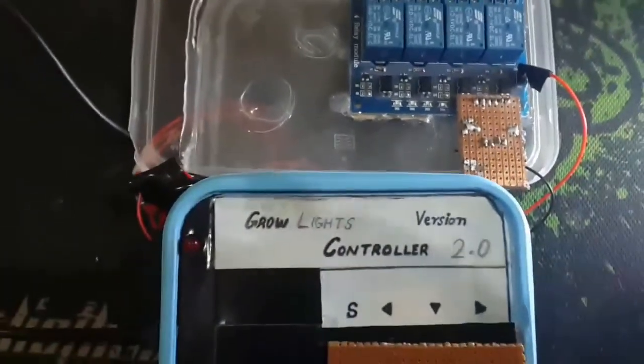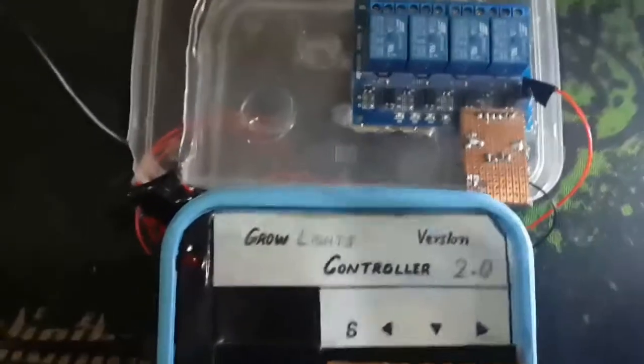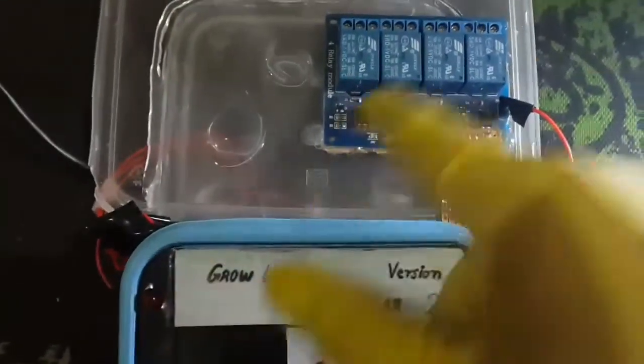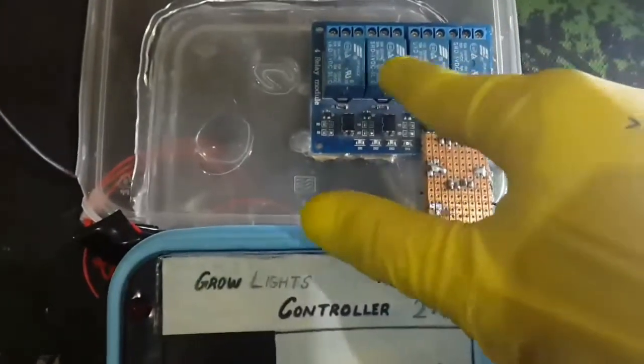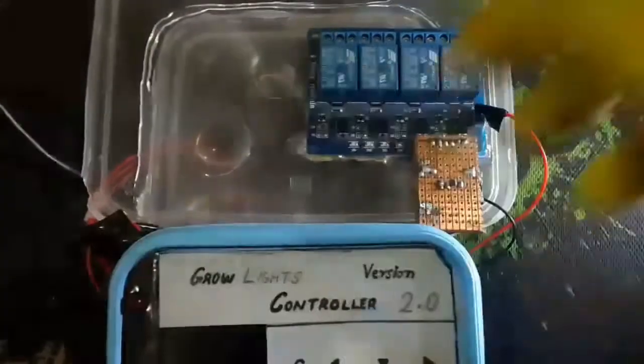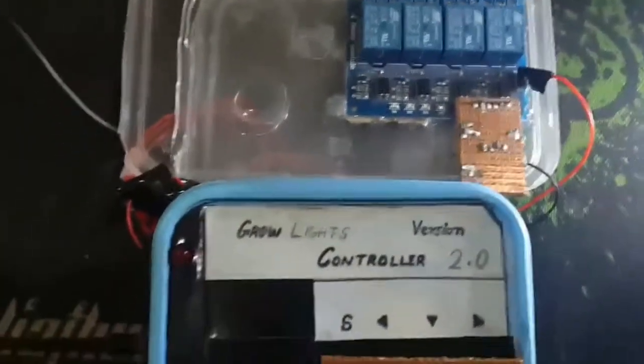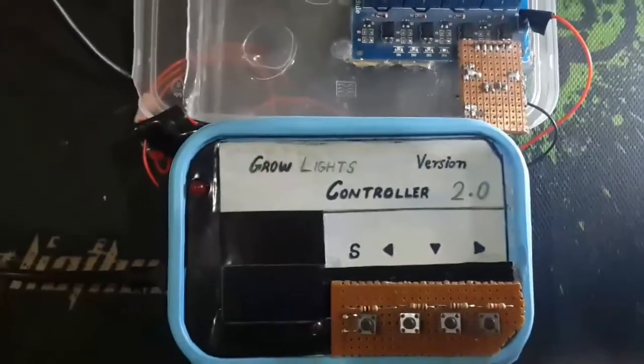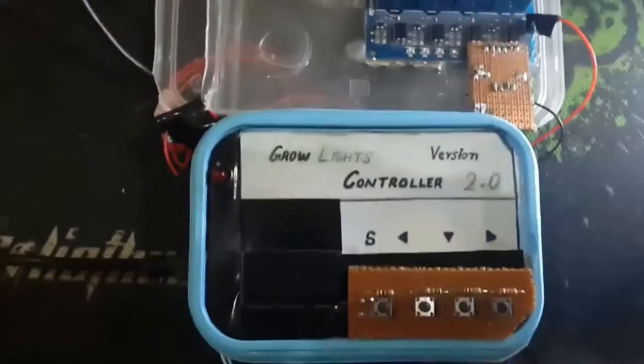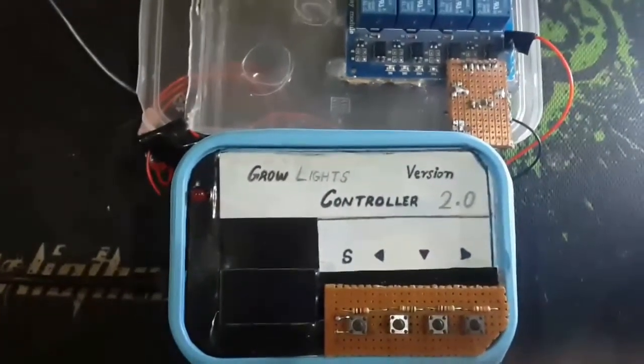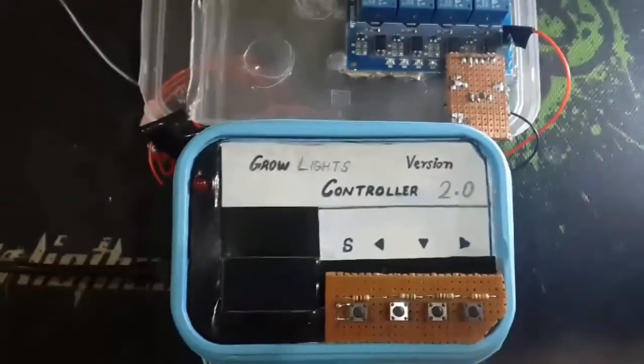Seven digital pins are used to turn on and off different things. One is connected to this LED, four are connected to these relays, and two other pins are not connected right now. In total it can control six different lights according to the different settings for on and off hours. So I'll power it up.